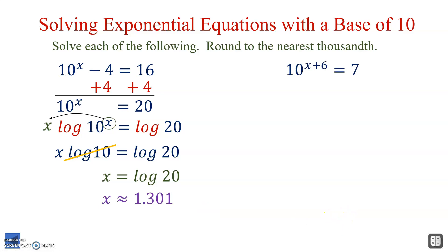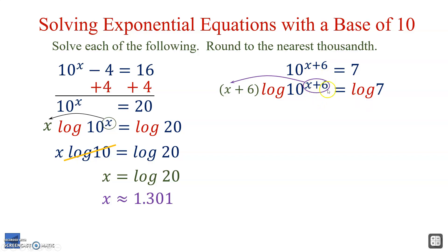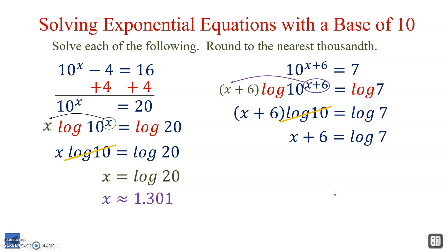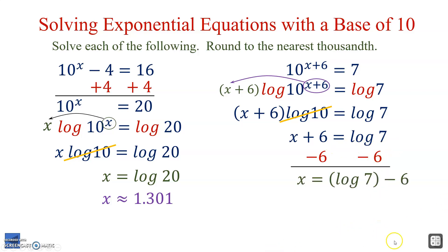Next: 10 to the x plus 6 equals 7. Out of the 10 and the 6, the 10 is what's furthest from the unknown because both the 6 and x are part of the exponent. So we log both sides first; the entire exponent x plus 6 comes out in front. That gives us x plus 6 times log 10 equals log 7. Log 10 cancels, leaving x plus 6 equals log 7. Subtracting 6: x equals log 7 minus 6.